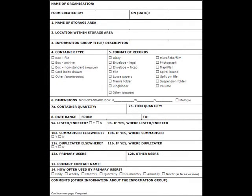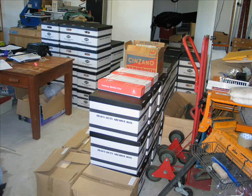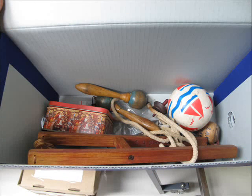Alternatively, you could use a survey template such as this fairly detailed example from Parbica, the Pacific Regional Branch of the International Council on Archives. As part of your survey, we also recommend taking photographs of your collection, such as the ones you can see on this video. These images provide a lot more information on the nature and extent of the records in your custody than you are able to describe in words.